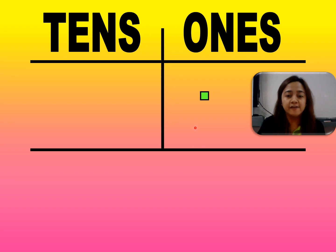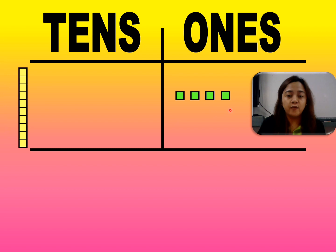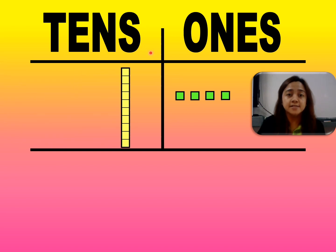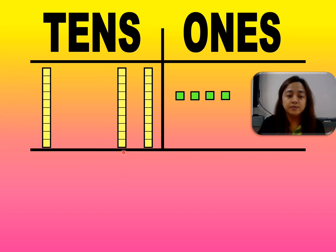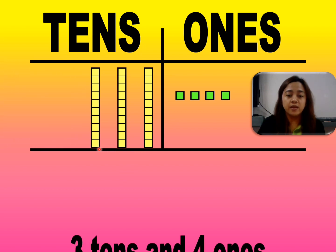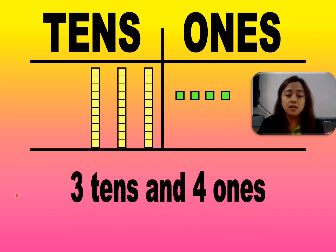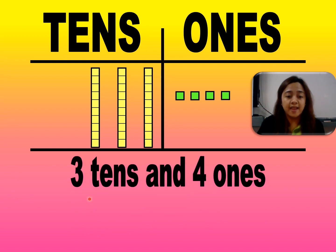Ones: we have one, two, three, four. In tens: one, two, three. So we have here three tens and four ones.